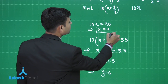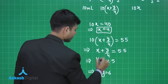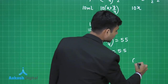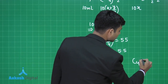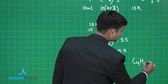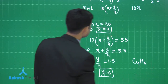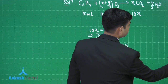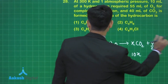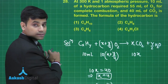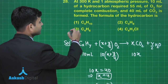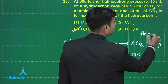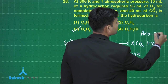So x = 4 and y = 6, giving us hydrocarbon C4H6. The correct answer is given in option 3.